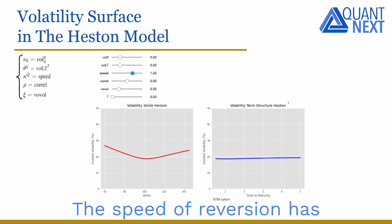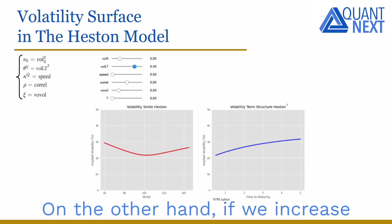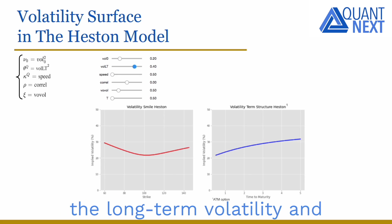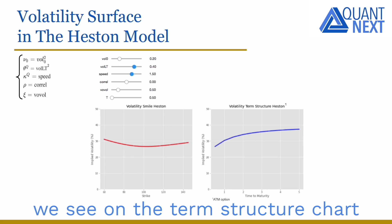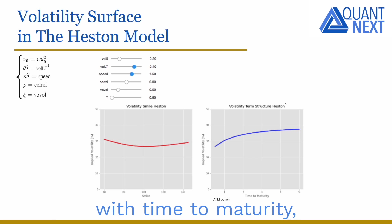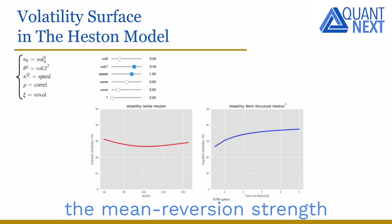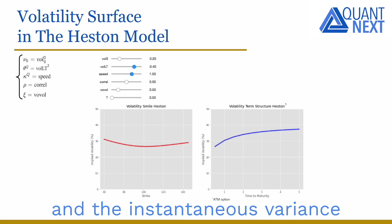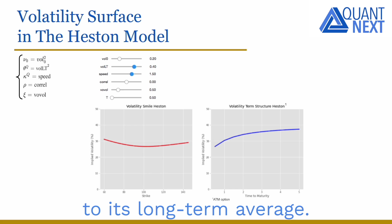The speed of reversion has a small impact on the volatility smile. On the other hand, if we increase the long-term volatility and the speed of reversion together, we see on the term structure chart that the at-the-money implied volatility increases faster with time to maturity, which makes sense as the stronger mean reversion causes the instantaneous variance to converge faster to its long-term average.